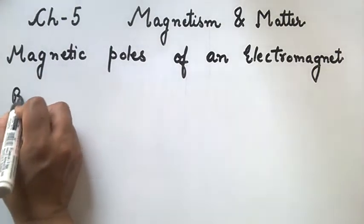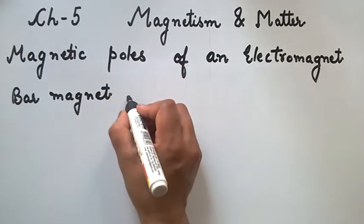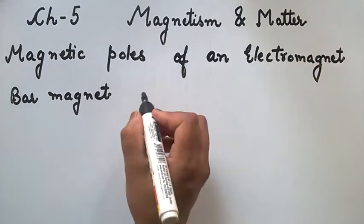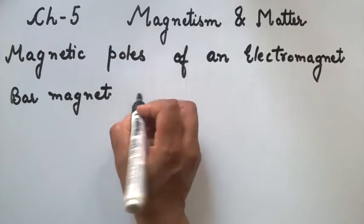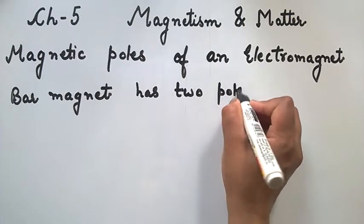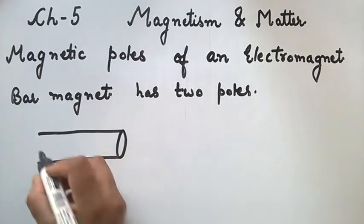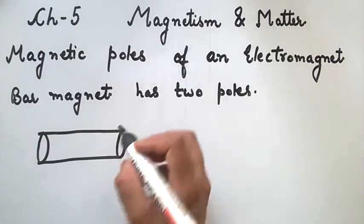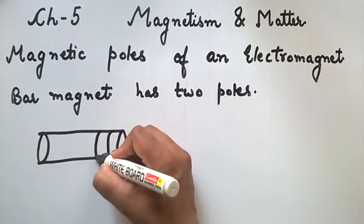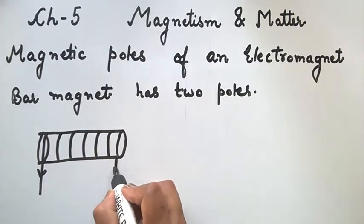We also know that a bar magnet has two poles. Thus, if a bar magnet is similar to a solenoid, then it must have two poles. So if we would like to determine these poles, let's draw one diagram. This is a soft iron cylinder in which current is flowing through a coil, and the direction of current is in this way.